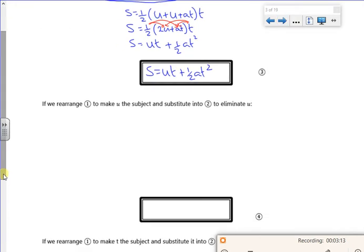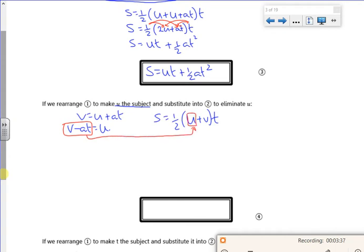So then if we rearrange equation 1, which is V equals U plus aT, to make U the subject, so V minus aT is U, and substitute it into S. I'm kind of doing the opposite. So I'm going to replace U with that.